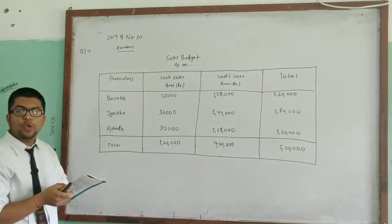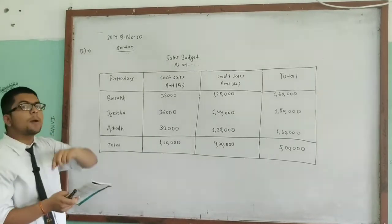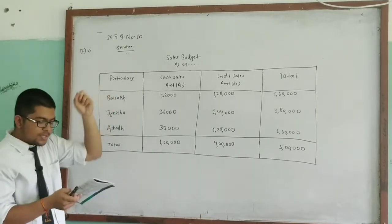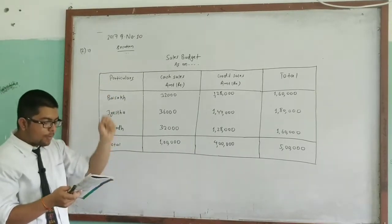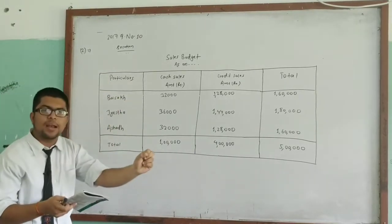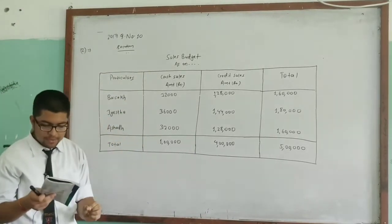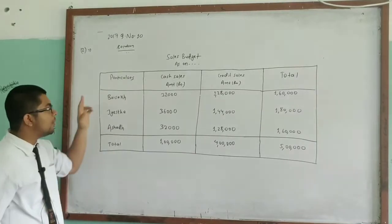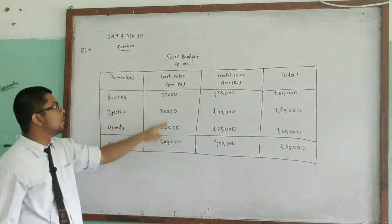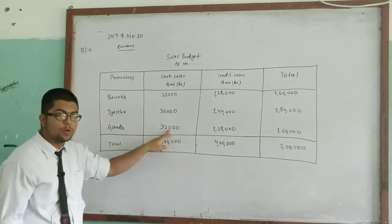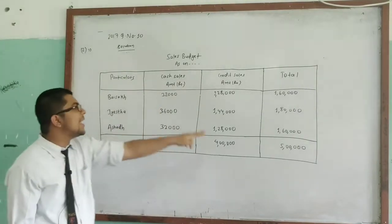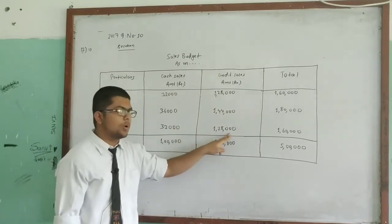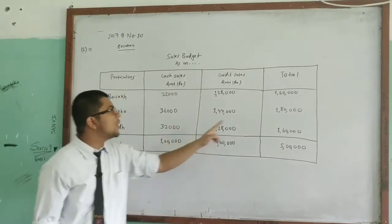For the last month, 16% of total sales of Rs. 10 lakh. 16% of 10 lakh gives Rs. 1 lakh 60,000. Of this, 20% is cash sales and 80% is credit sales, giving the respective totals for that month.